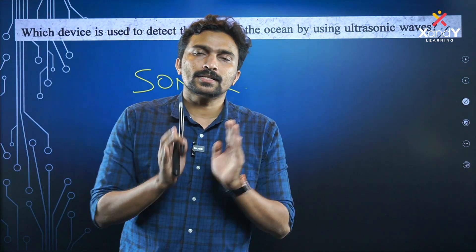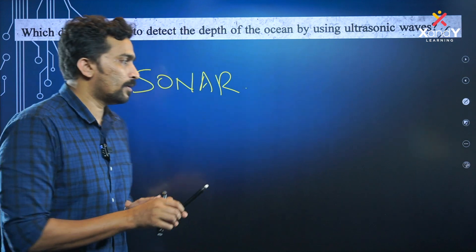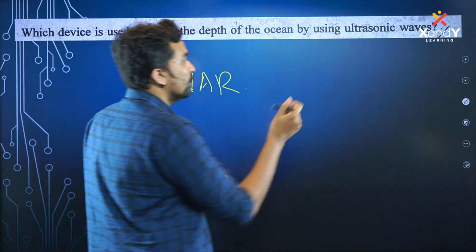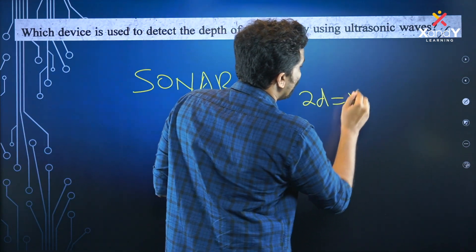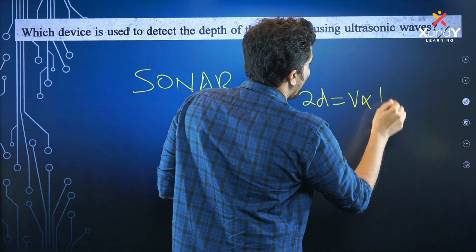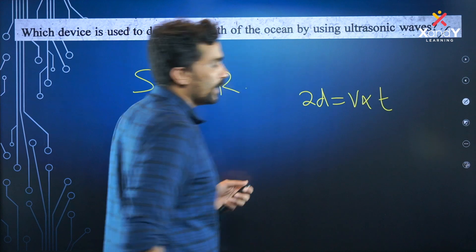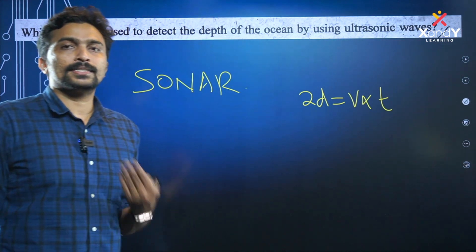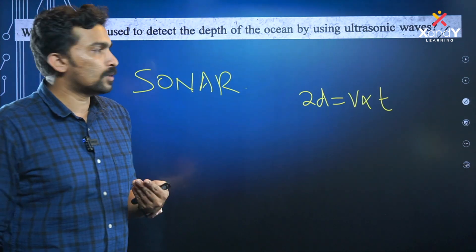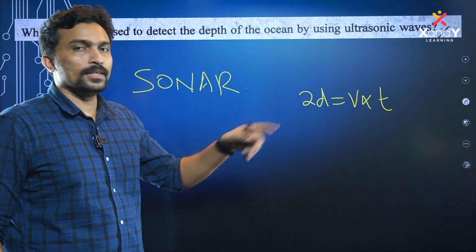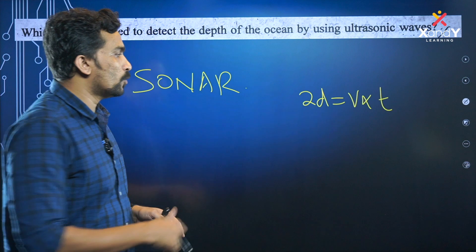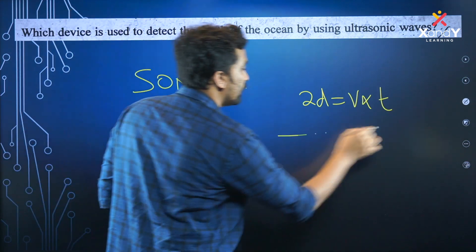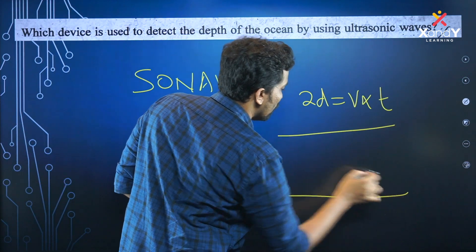SONAR distance calculation: 2D is equal to V into T. Then using the speed of sound, we can calculate the distance by the formula 2D = V × T.